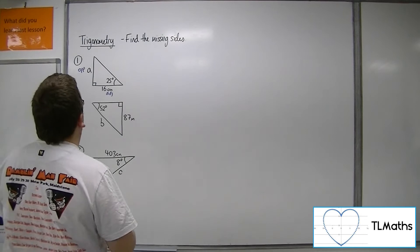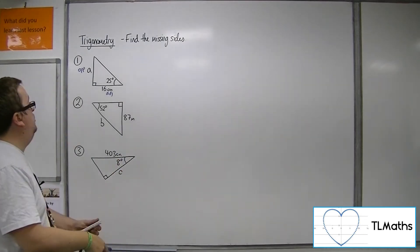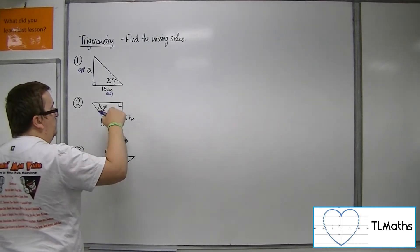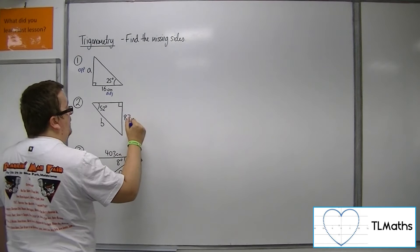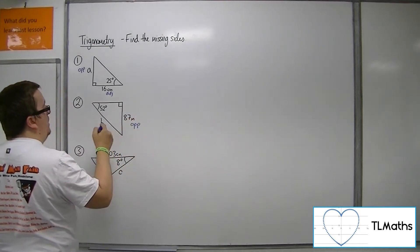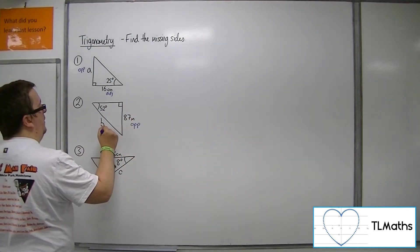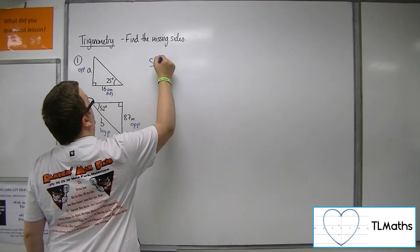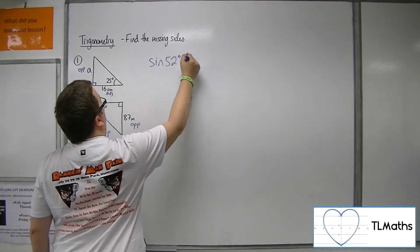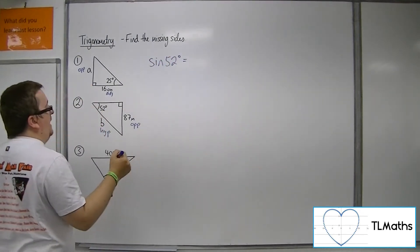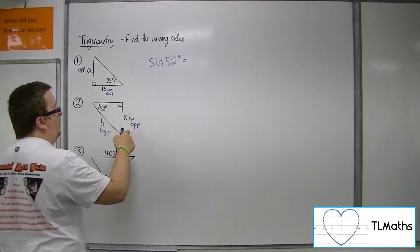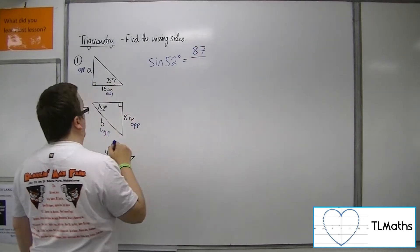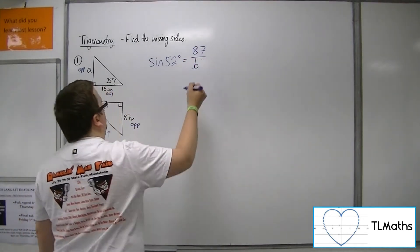Now, as for number two, we have an angle. We've been given its opposite side, and we want to find the hypotenuse. So that means that sin of 52 degrees will be equal to the opposite, 87, over the hypotenuse, which is B.